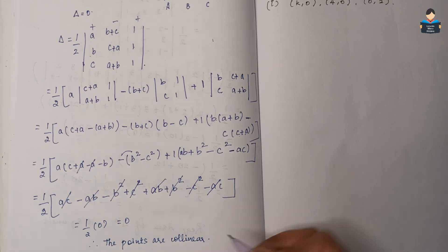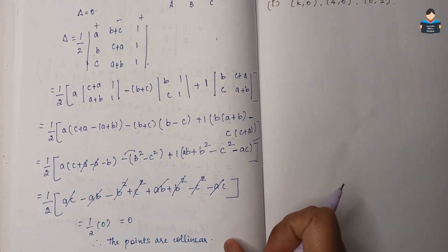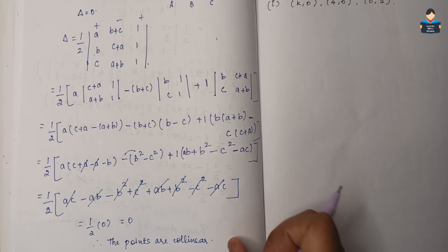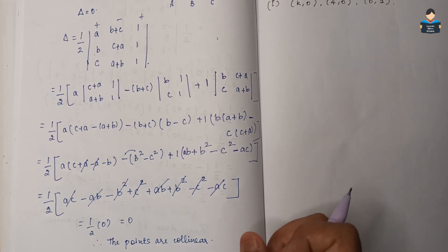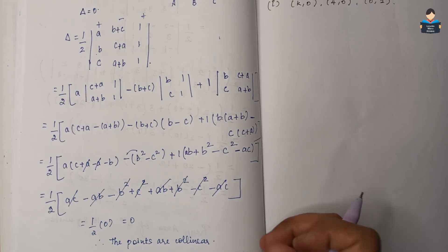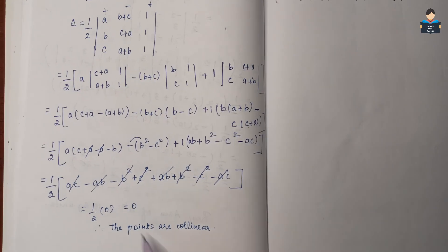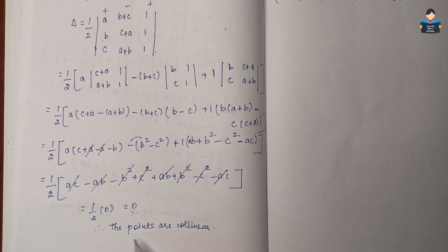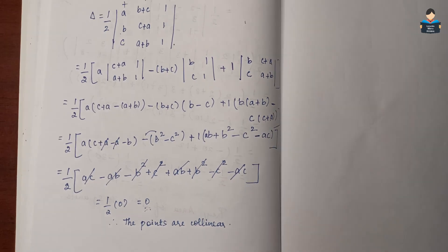Hence the points are collinear. Therefore the points are collinear. If the area of the triangle equals 0, that means the determinant value is 0, and the points are collinear.